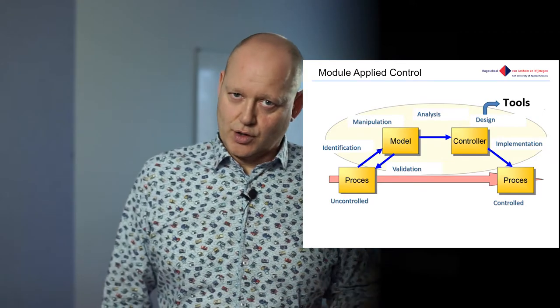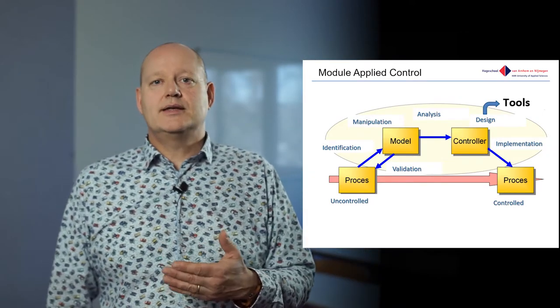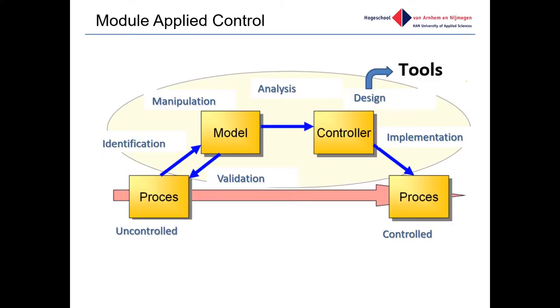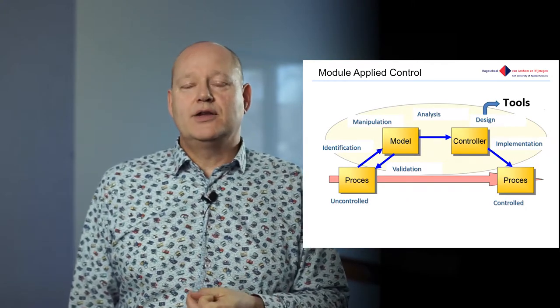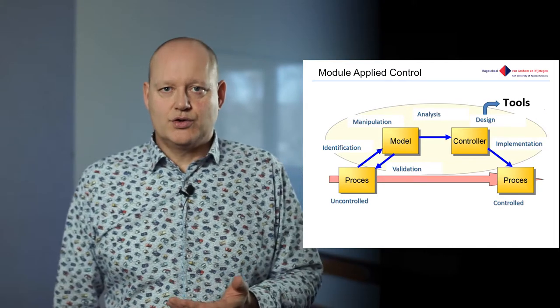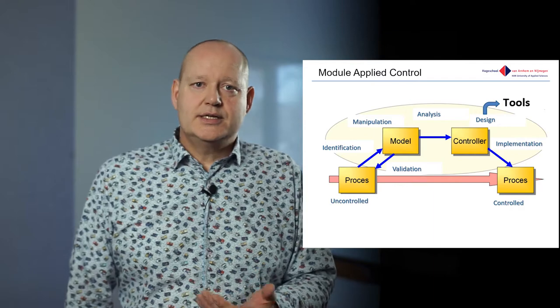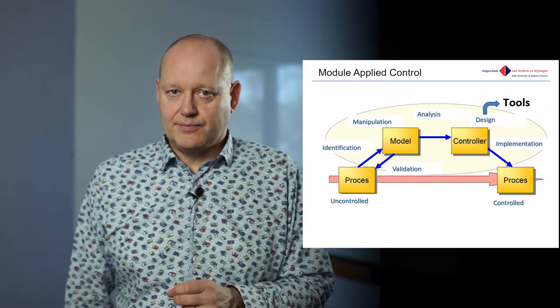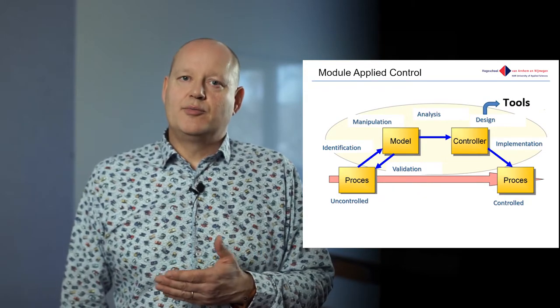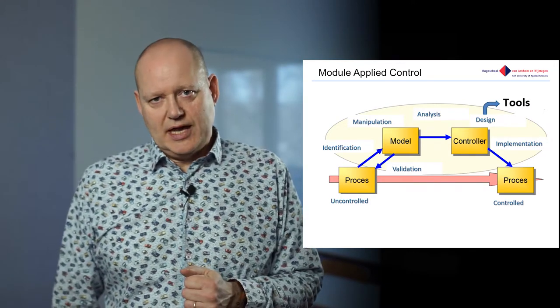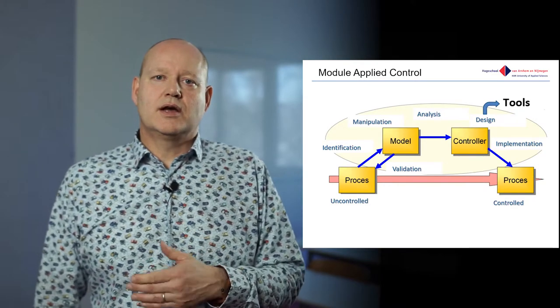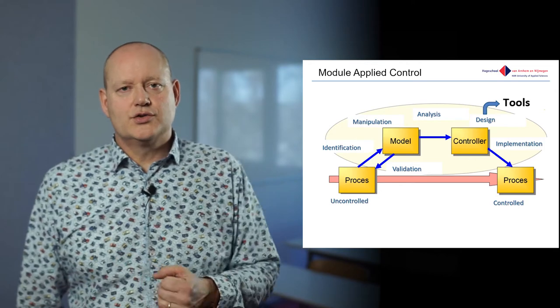It is important to come from a process to a controlled process, and we do that in a few steps. We have a certain technique to do that. First we describe this system with mathematical relationships and we build a model. This model could be white box or black box. The next step is to simulate this model and analyze its behavior. Then you design an appropriate controller that will control your process and a certain variable you choose. After you have designed a very good controller, you implement it in the process. In this way you come from an uncontrolled process to a controlled process.